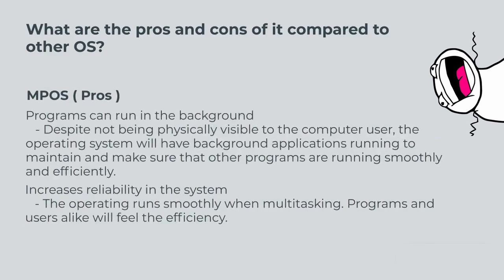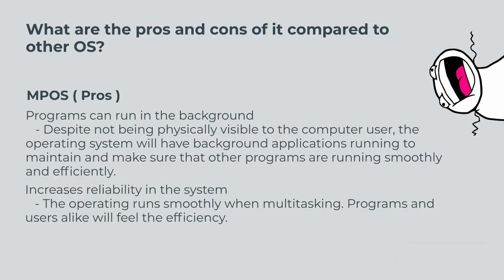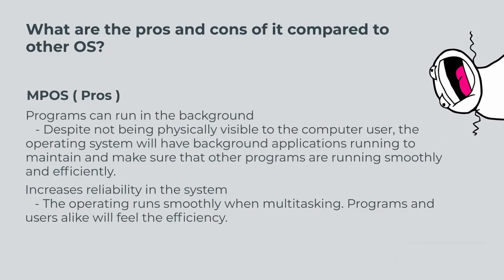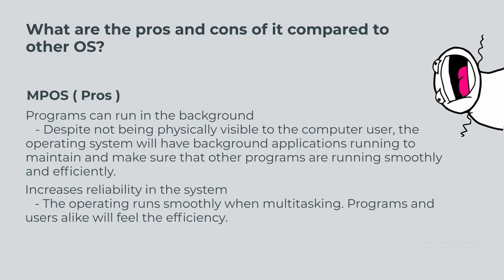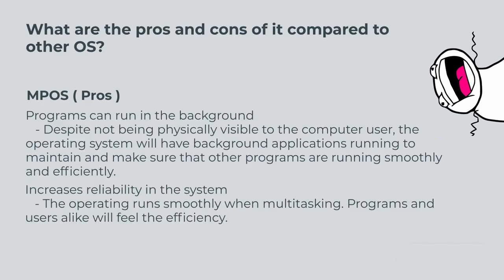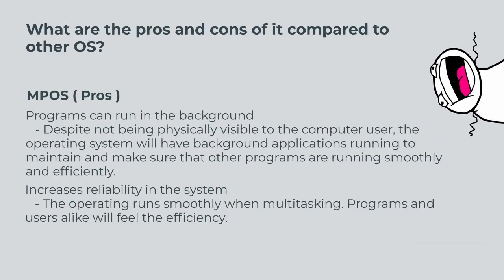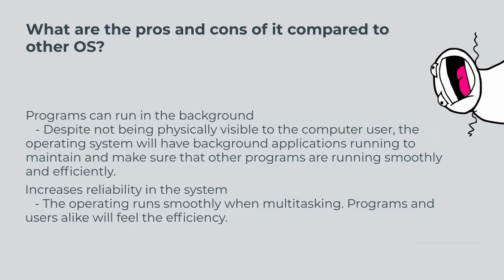Multiprocessing OS pros: programs can run in the background. Despite not being physically visible to the computer user, the operating system will have background applications running to maintain and make sure that other programs are running smoothly and efficiently. This increases reliability in the system — the operating system runs smoothly when multitasking, and programs and users alike will feel the efficiency.